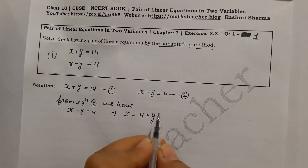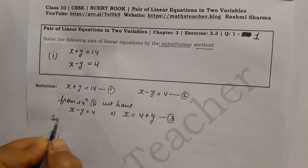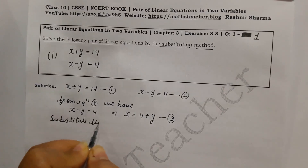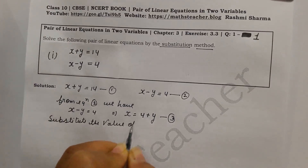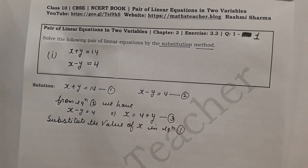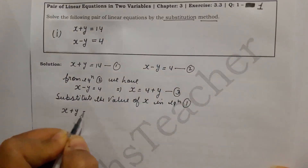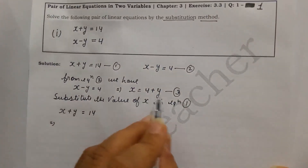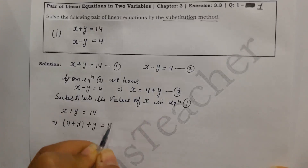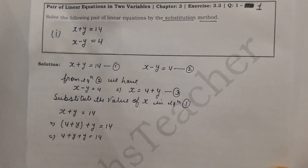We substitute the value of x into equation no. 1. Equation no. 1 is x plus y equals 14. Substituting x equals 4 plus y, we get: 4 plus y plus y equals 14. This gives us 4 plus 2y equals 14.